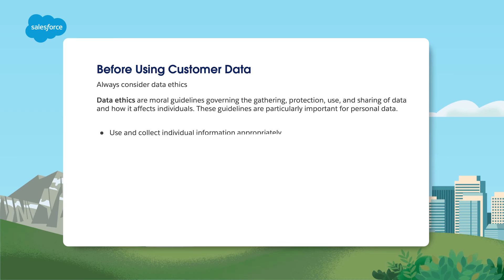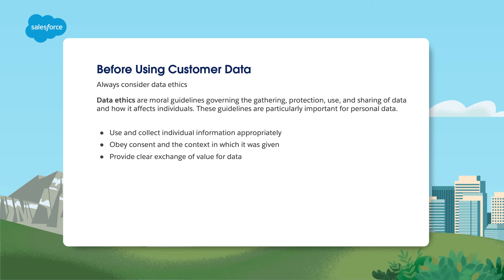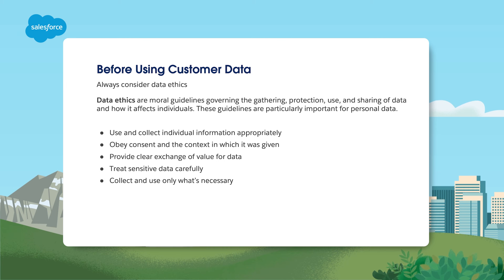So you're ready to start Data Cloud implementation, but before implementation you need to consider how customer data is collected and will be used in Data Cloud. This is where data ethics comes in. When using data in Data Cloud, be sure to obey consent and the context in which it was given, provide clear exchange of value for data, treat sensitive data carefully, collect and use only what's necessary, and choose third-party partners who handle data appropriately.